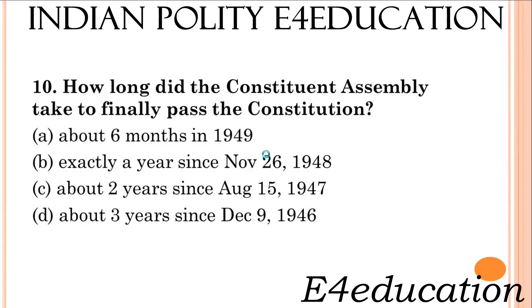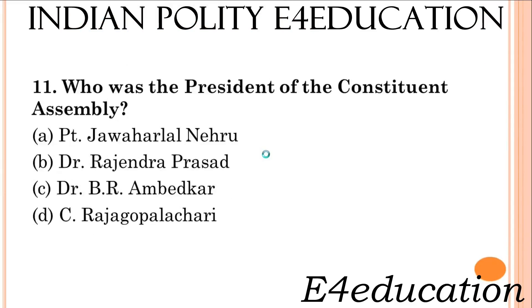How long did the Constituent Assembly take to finally pass the constitution? About 3 years, since December 9, 1946. Who was the president of the Constituent Assembly? Dr. Rajendra Prasad.